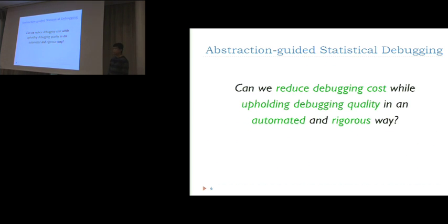In our work, we ask: can we reduce the debugging cost while upholding the debugging quality in an automatic and rigorous way? Automatic means we don't need much manual effort to check anything. Rigorous means we want to get the same result as the full instrumentation approach.